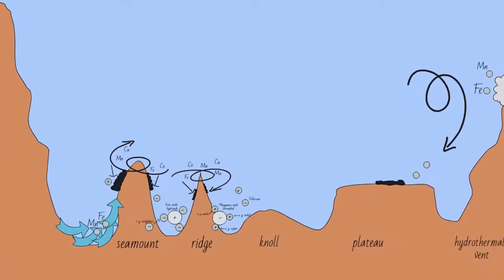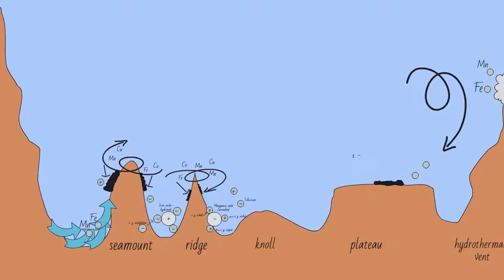The growth rate of crusts is relatively slow, with a growth rate of 1 to 5 mm per million years. Crusts can have a thickness of a few millimeters and up to 26 cm, so you can calculate for yourself how old these crusts must be.